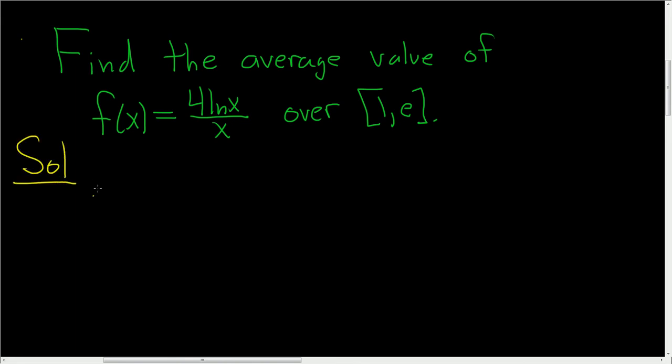The average value of this function over the interval is given by the formula 1 over b minus a times the definite integral from a to b of f of x with respect to x.